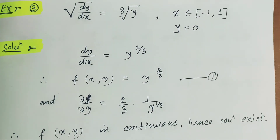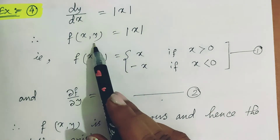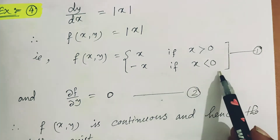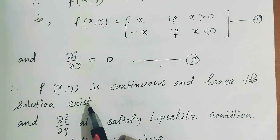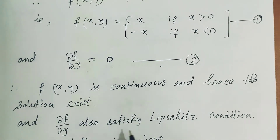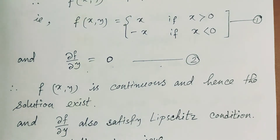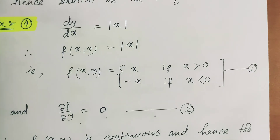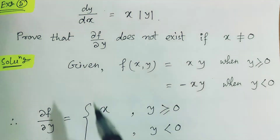Fourth example: dy/dx = |x|. Here f(x,y) = |x|, which equals x if x > 0 and −x if x < 0. Taking the derivative gives 0 in both cases, so f(x,y) is continuous and the solution exists. Also, ∂f/∂y satisfies the Lipschitz condition since |∂f/∂y| ≤ 0 always. Therefore the solution is unique as well.